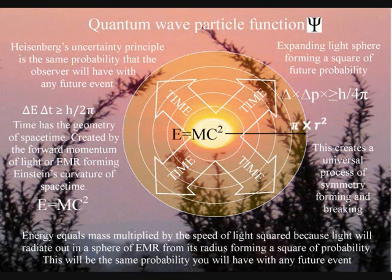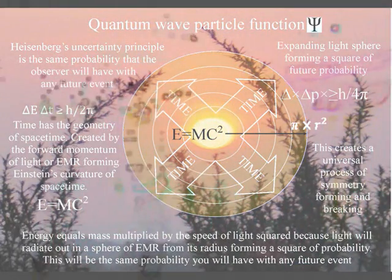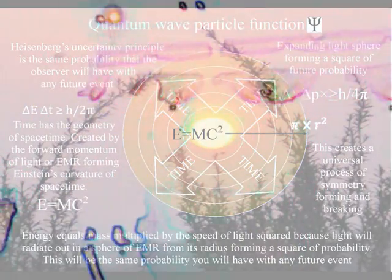Because the universe is never at absolute zero, everything is radiating light waves of electromagnetic radiation continuously. If our eyes were more sensitive to the light, we would be able to see this universal process.